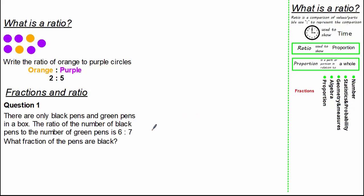Now let's look at an exam question. There are only black pens and green pens in a box. The ratio of the number of black pens to the number of green pens is 6 to 7. What fraction of the pens are black? Now firstly we write the ratio of black to green, and it was 6 to 7. Remember the whole for the ratio is the sum of its parts, and the total parts for a fraction is indicated by the denominator. So therefore the fraction of black pens is 6 over 13.